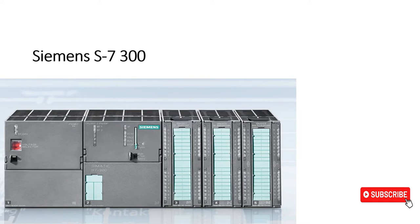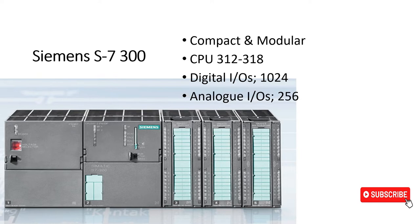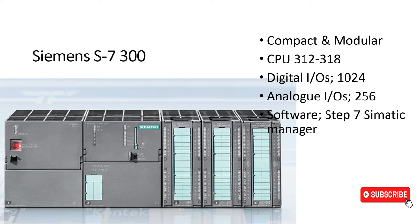Let's start by going through an overview of the Siemens S7-300 PLC. It is a medium-level PLC which is compact and also modular. Its CPU versions run from 312 to 318, and it can support up to 1024 digital inputs and outputs and up to 256 analog inputs and outputs. The software used to program it is Step 7 SIMATIC Manager.